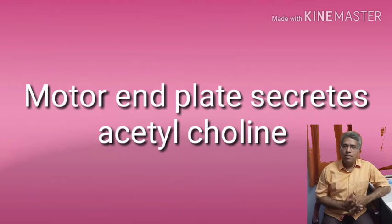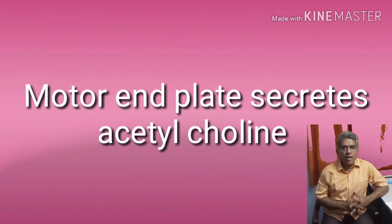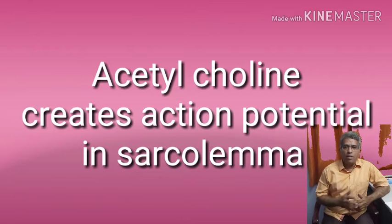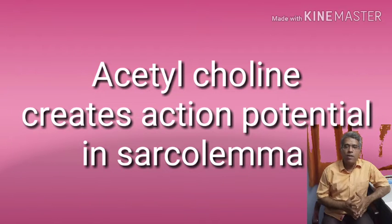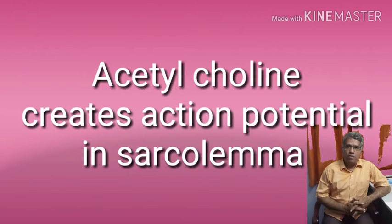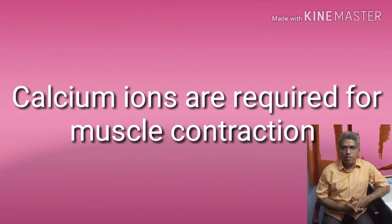Each muscle is innervated by an axon, and the junction between the axon and the muscle is called the neuromuscular junction. Whenever a stimulus is received by the axon, it transmits the stimulus to the neuromuscular junction or motor end plate, which releases acetylcholine. This acetylcholine creates an action potential in the sarcolemma.